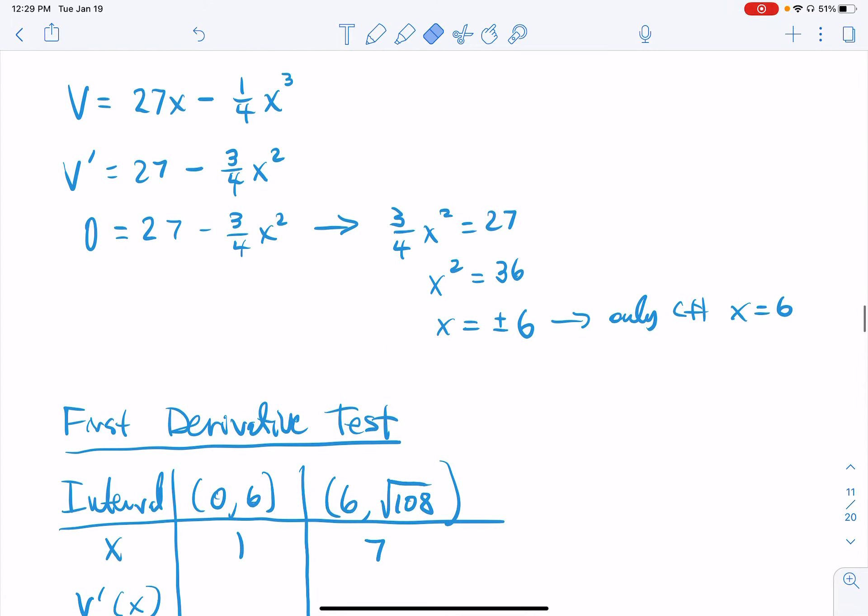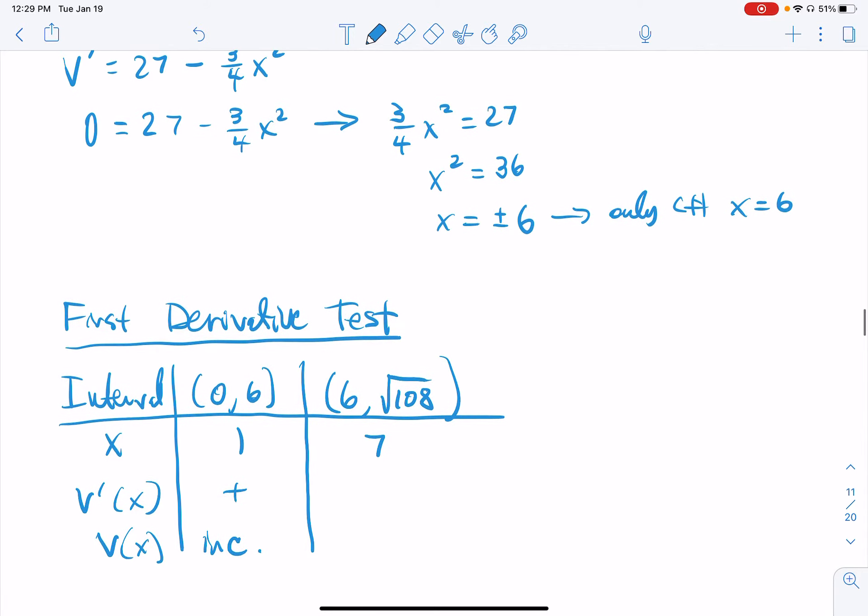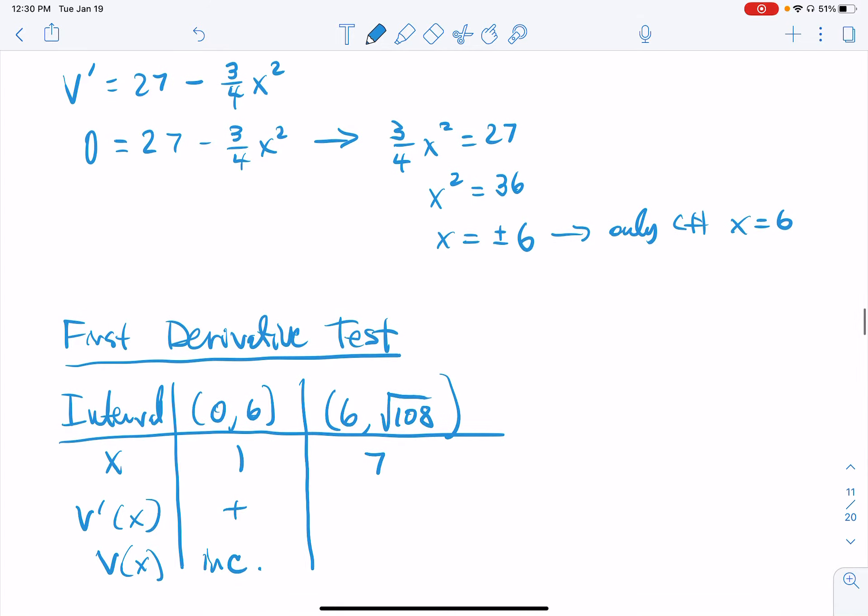So if I stick in 1 here, I stick in 1, I am subtracting away 3 fourths from this. That's definitely smaller than 27. It's going to be a positive number, which means that v is increasing. I wonder what it's going to do at 7.